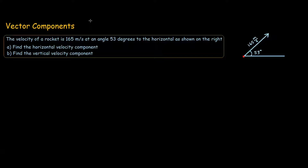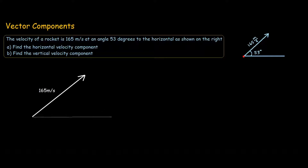To solve this problem you can use simple trig. Let me draw up the velocity vector. As you know, you can add two vectors to find a resultant vector. In this case we are doing it backwards — breaking down the resultant vector into two components: the horizontal and the vertical component. This is the horizontal component, and the blue one is the vertical component.